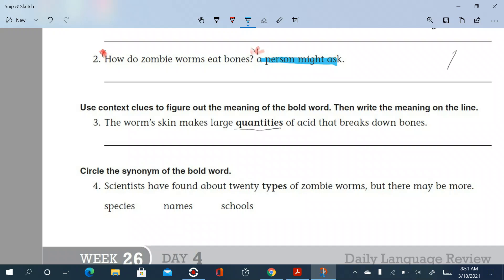Large quantities. Maybe something that's made, right? They make a lot of it. So, if it's a lot, you can say that instead of quantities, you can say that it means amounts. Large amounts of acid.